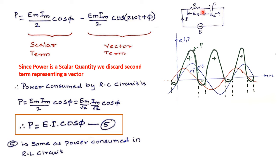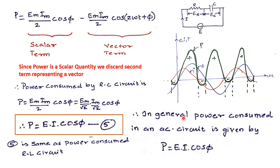The power consumed in the circuit: some part is dissipated as heat across R, and some part is stored in the form of electrostatic energy across the capacitor. The power consumed is P = EI cos(φ) — it is the amount of power useful to do work. This formula holds whether it is an RL circuit, an RC circuit, a combination of RLC, or whether components are connected in series, parallel, or series-parallel. The power consumed in any single-phase AC circuit is always P = EI cos(φ).